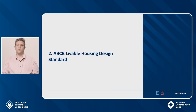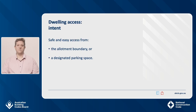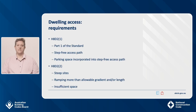I'll now move on to the ABCB liveable housing design standard, which provides the technical details for DTS solutions. Part 1 of the standard covers dwelling access. The intent of the dwelling access requirement is to provide safe and easy access from the allotment boundary or a designated parking space. Dwelling access is covered by the DTS provisions in NCC Volume 2. Clause H8D2 states that a Class 1a dwelling must comply with the standard. Part 1 of the standard has two components: step-free access path and parking space incorporated into the step-free access path.